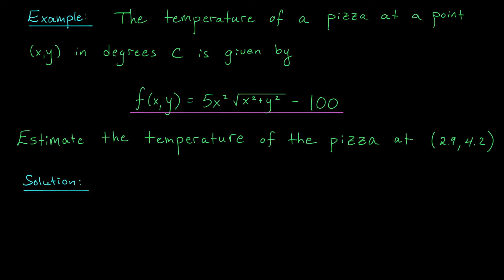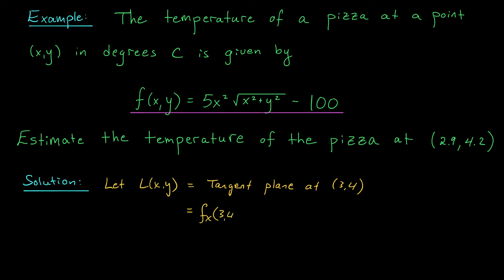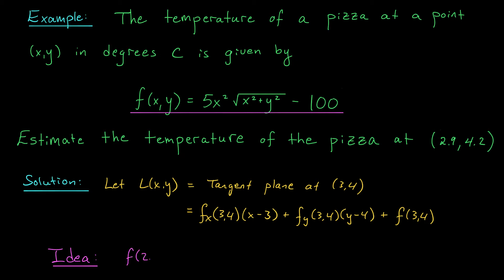And that's what we're going to try. The first question we want to ask is: at what nice point near (2.9, 4.2) should we be putting our tangent plane? I think the closest nice point near (2.9, 4.2) to work with would be the point (3, 4). So let's say that L(X, Y) will denote the tangent plane at the point (3, 4). According to our formula from the last video, the equation of this tangent plane is F_x(3,4) times (X minus 3) plus F_y(3,4) times (Y minus 4) plus F(3,4). Our idea is that F(2.9, 4.2) will be approximately equal to L(2.9, 4.2).